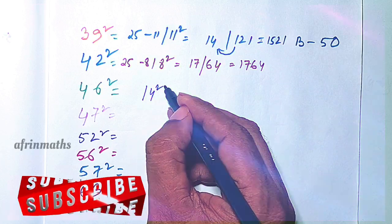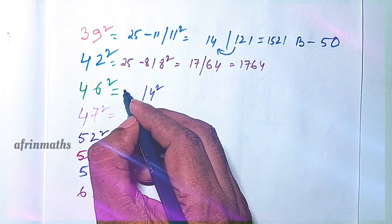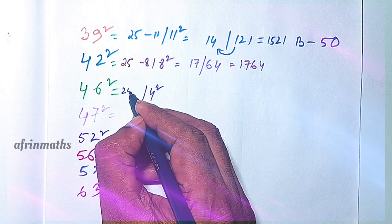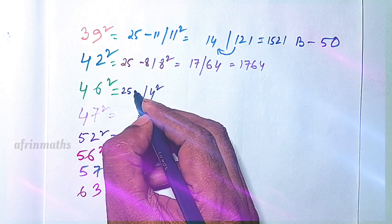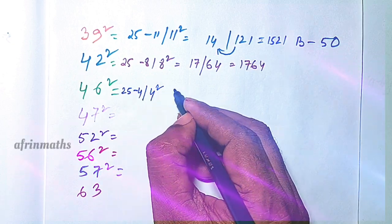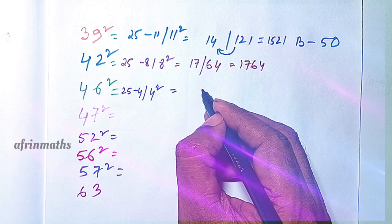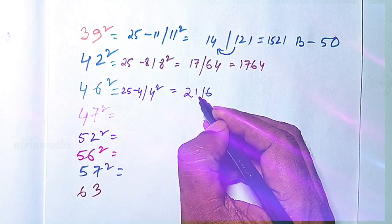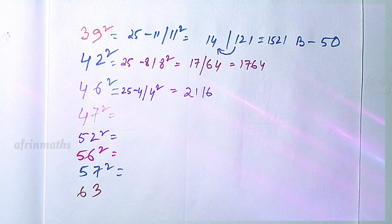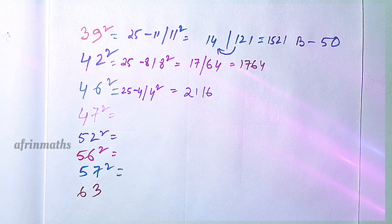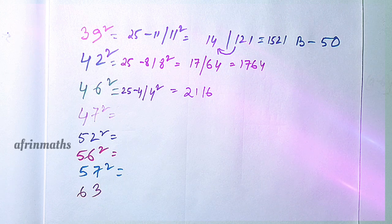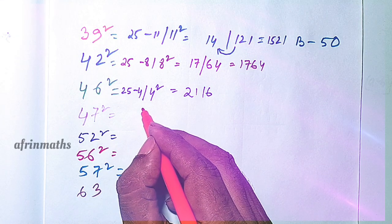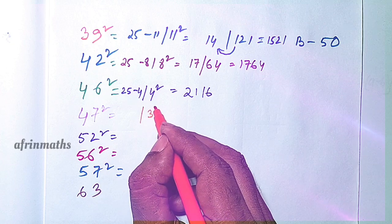Let's check 46 squared. It is 4 away from 50, so we subtract 4 from 25, giving 21. 4 squared is 16. So 2116 is the square of 46.